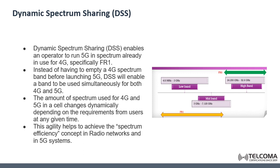For example, when an operator is just launching 5G, they can use just a small portion of the band for 5G while the bigger part is used for 4G. Gradually, they can start increasing the band allocated to 5G and decreasing the band allocated to 4G. The flexibility brought to the network by dynamic spectrum sharing will help operators achieve spectrum efficiency and facilitate the transition from 4G to 5G over time.